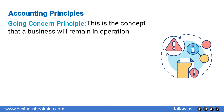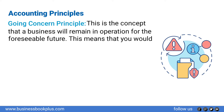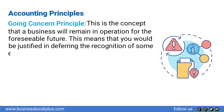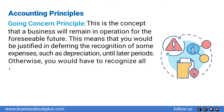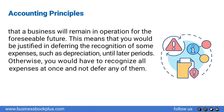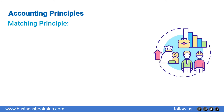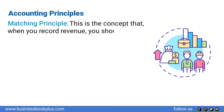Going concern principle: this is the concept that a business will remain in operation for the foreseeable future. This means that you would be justified in deferring the recognition of some expenses, such as depreciation, until later periods. Otherwise, you would have to recognize all expenses at once and not defer any of them.